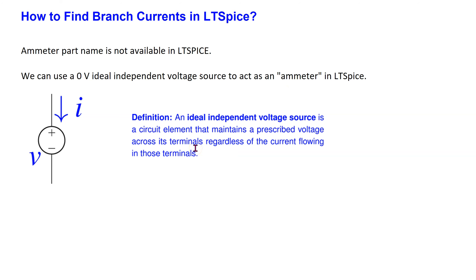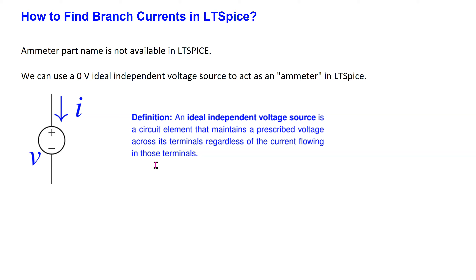Recall that an ideal independent voltage source is a circuit element that maintains a prescribed voltage V across its terminals, regardless of the current I flowing in those terminals. This prescribed voltage can have a zero-volt value. A zero-volt magnitude ideal independent voltage source connected in series with the circuit element of interest does not disturb the original circuit and allows us to determine the branch current direction in LTSpice.